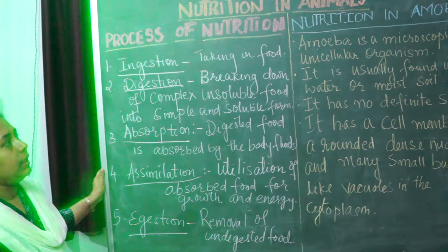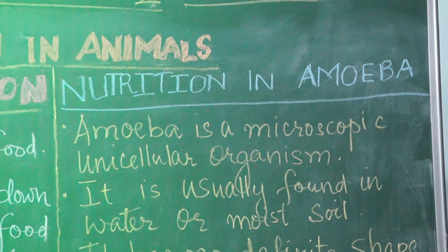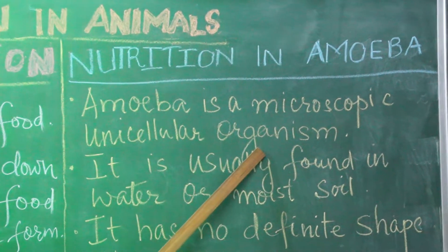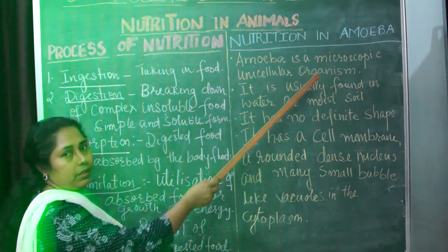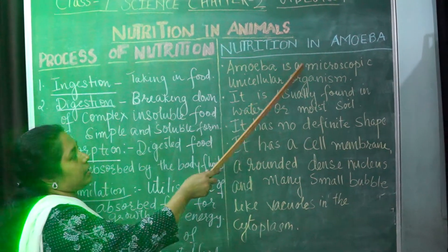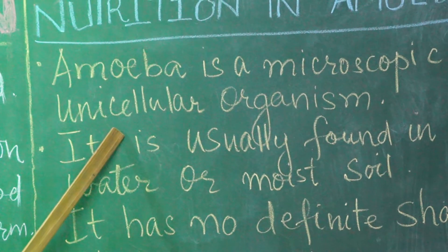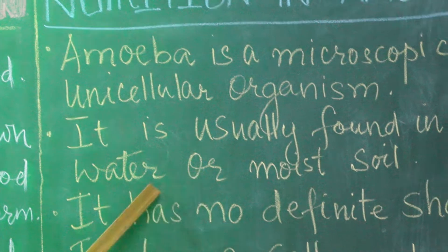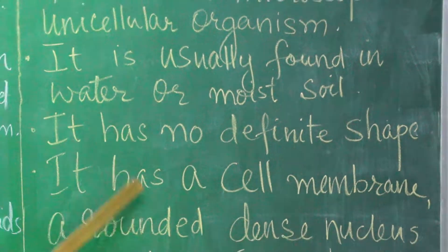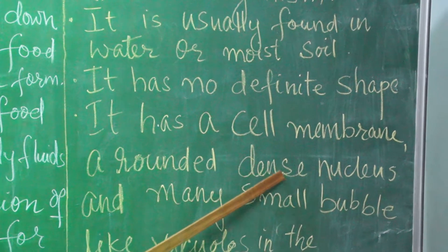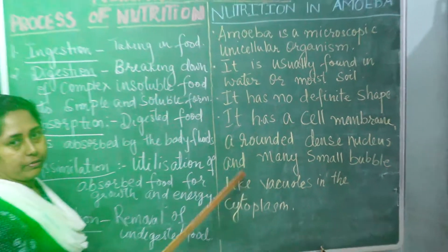Now we will study nutrition in amoeba. Amoeba is a microscopic unicellular organism — single-celled and very small, seen only through a microscope. It is mostly found in water or moist soil. It has no definite shape; it is irregular and can change its shape. It has a cell membrane, a rounded dense nucleus, and many small bubble-like vacuoles in the cytoplasm.